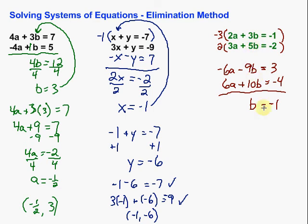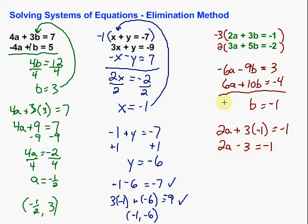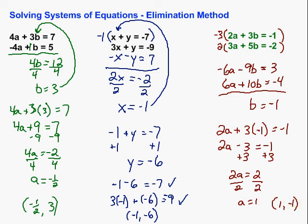Now we're going to put that back into one of our two original equations. I'm going to take the first one: 2a plus 3 times b, and b is negative 1, so 3 times negative 1, equals negative 1. Simplifying: 2a minus 3 equals negative 1. To get a by itself, add 3 on both sides: 2a equals 2. Then divide by 2 on both sides: a equals 1. And our ordered pair — remember, put them in alphabetical order — is (1, negative 1).